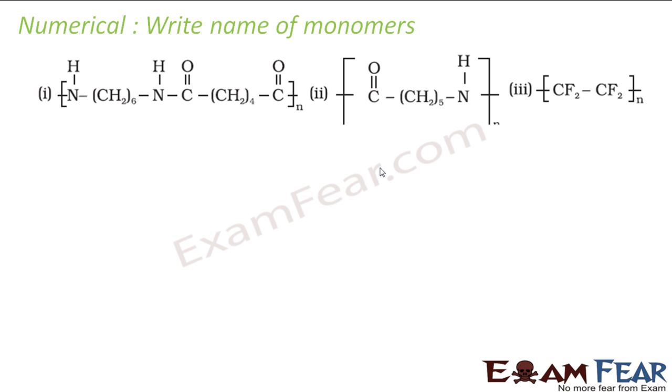The next question is to write the name of monomers for these compounds. In this case, we know that this is Nylon 66. And we know that this is from hexamethylene diamine, this particular part, and this part is formed from adipic acid. So this part is hexamethylene diamine and this part is adipic acid.